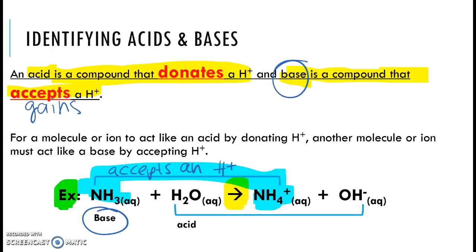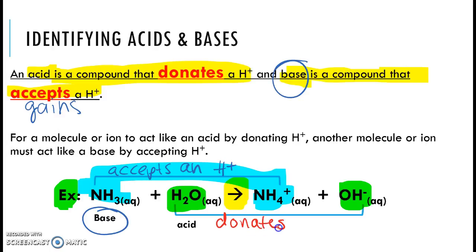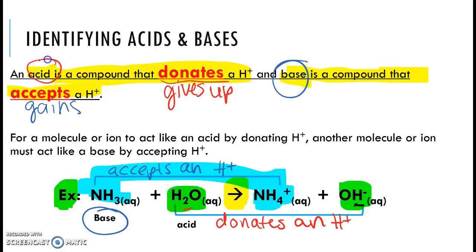We're also going to connect H2O and OH-. We can see that what is happening here is H2O gives up or donates an H+, because it goes from two hydrogen atoms in this formula to just one. So by definition, the substance that donates or gives up an H+ is our acid. So we've labeled H2O as our acid.